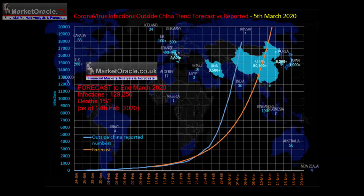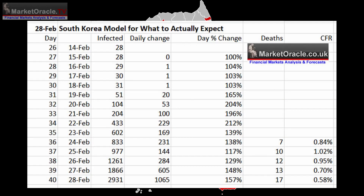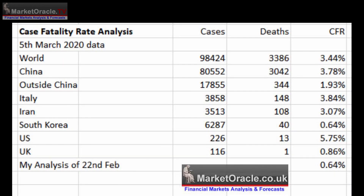With several more weeks of infections data from a range of nations, the most important is South Korea, which my analysis of 26th February concluded was likely to be the most accurate in recording the numbers of infected, and thus a good harbinger of what to expect in the West during March and April. The latest global data shows total reported cases of 98,424 resolving in 3,386 deaths.